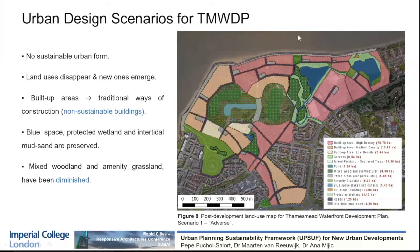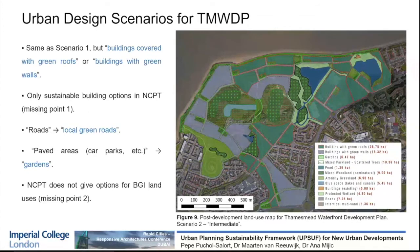Secondly, we present scenario two, titled intermediate. It has the same number of hectares of buildings and building space, but with the difference that instead of traditional construction, buildings now have green roofs and green walls. And what were impermeable paved areas or traditional roads are now local green roads or gardens. Here we found one of the limitations of the NCPT tool, because it doesn't provide specific types of blue-green infrastructure land uses.